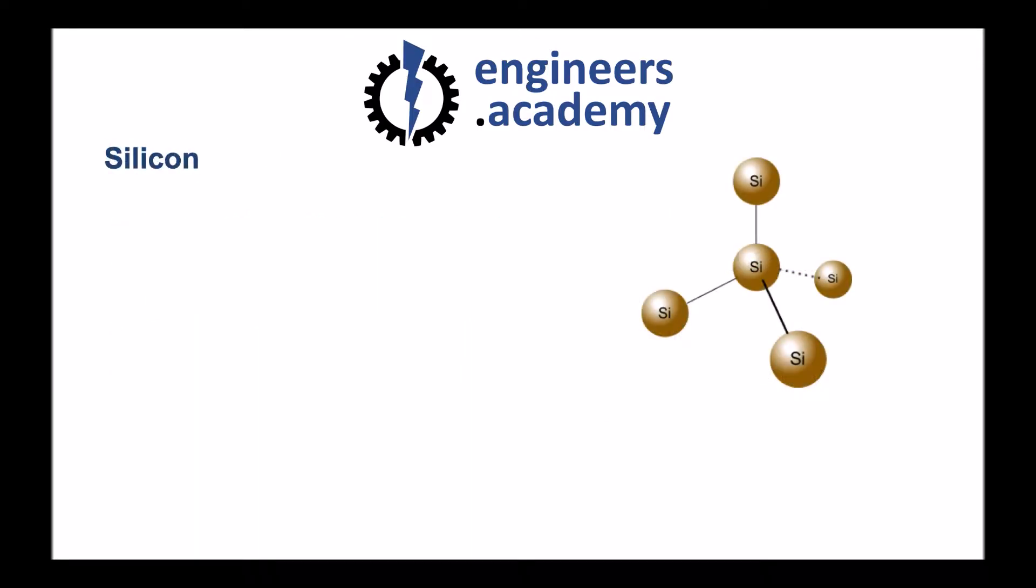So to begin with, silicon has a crystalline structure held together with four covalent bonds. You can see the atomic structure of silicon represented in a diagram there, and those silicon atoms are joined together by these four covalent bonds.